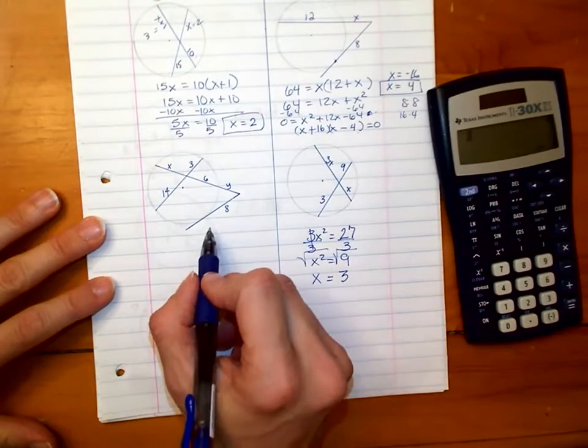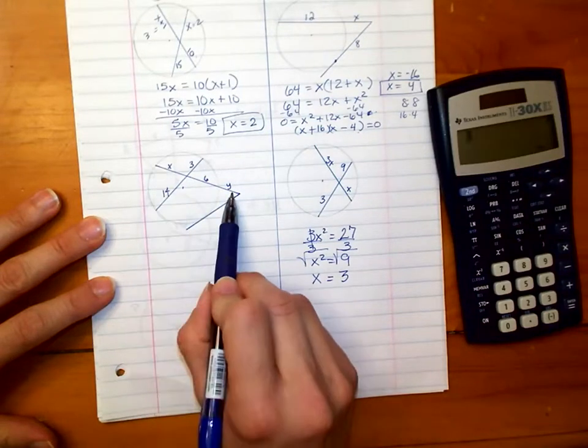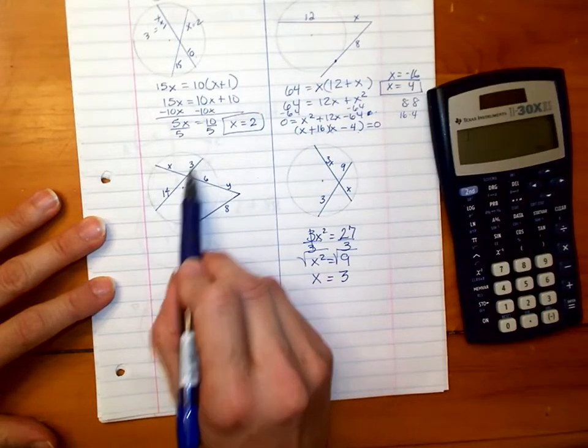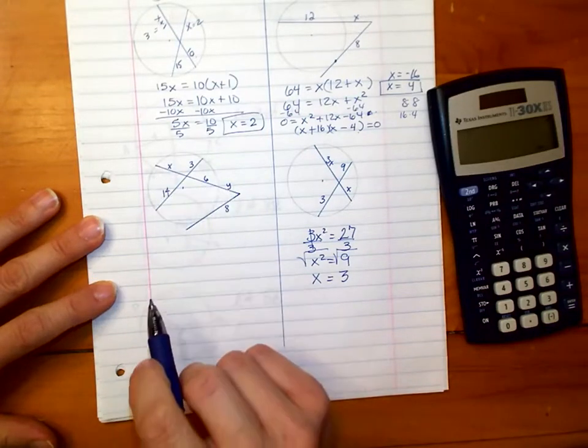Moving on to the most challenging one. There's two variables that we need to find here. We need to find this X and this Y. And since we have all these little parts except for that X, we're going to find that first, and then we'll use that to find Y.